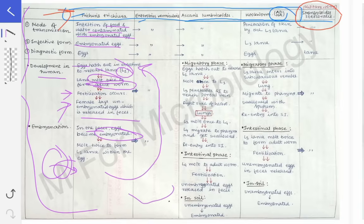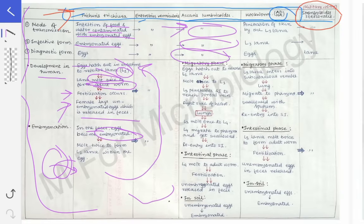Coming to Ascaris lumbricoides — the mode of transmission is the same, that is ingestion of food and water contaminated with embryonated eggs. The infective form is also the same — embryonated egg. The diagnostic form is also the same — eggs. This is similar to Trichuris trichura and Enterobius vermicularis.